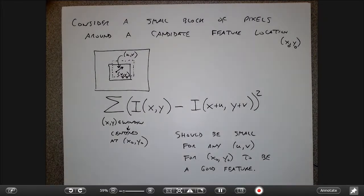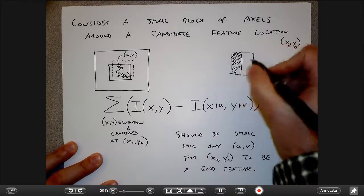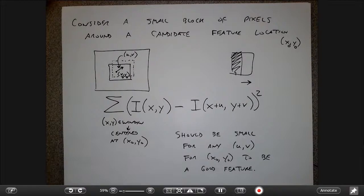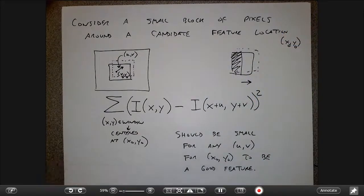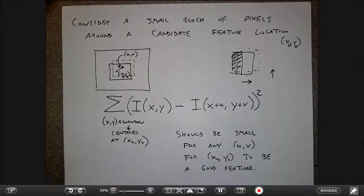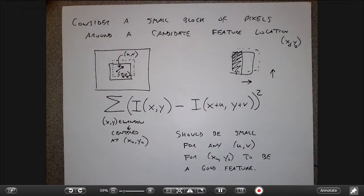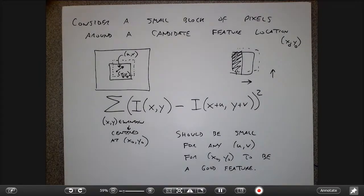If I could push the block in some direction and get a low difference, that would mean the feature looks the same when moved that way. For a flat block, moving in any direction gives high similarity, so cost stays low. For an edge, moving along the edge direction gives low cost — the aperture problem. A good corner gives high cost no matter which direction you move, which is what we want.